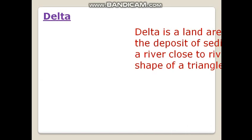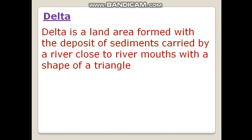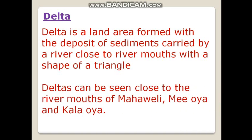Now, delta. A delta is a land area formed by the deposit of sediments carried by a river close to the river mouth, with the shape of a triangle. Examples: this can be seen close to the river mouths of Mahaweli, Mi Oya, and Kala Oya.